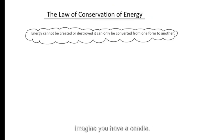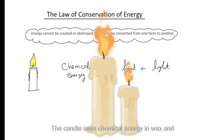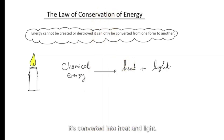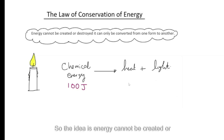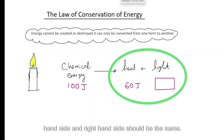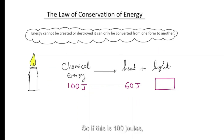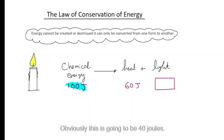Let's look at an example. Imagine you have a candle. The candle uses chemical energy in the wax and it's converted into heat and light. If the amount of chemical energy is 100 joules and the heat energy is 60 joules, the amount of light energy is 40 joules, because energy cannot be created or destroyed.